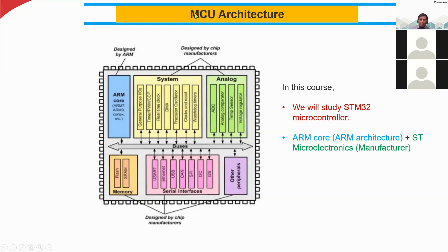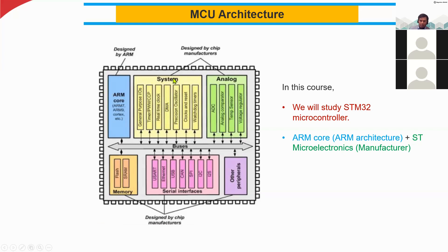This is the general architecture of the microcontroller unit. In the architecture, you can see we have the core — this core is designed by ARM, and it can be manufactured by Atmel, Philips, or others. This is the most important part — this is the heart of the entire microcontroller. We also have other blocks inside the microcontroller.